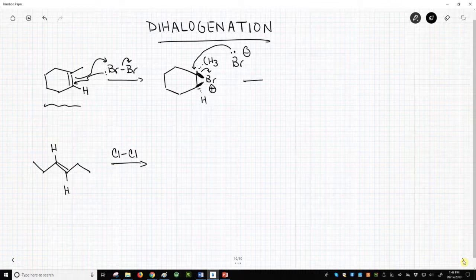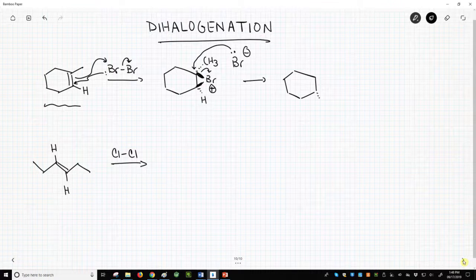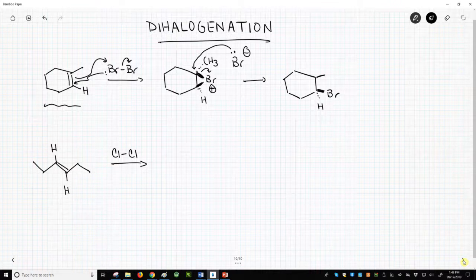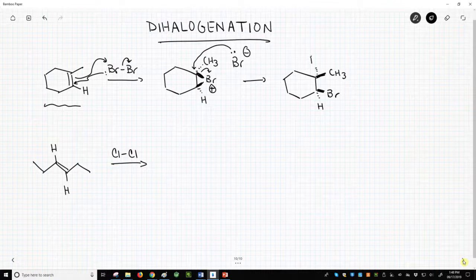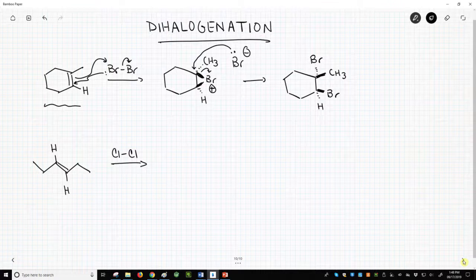The resulting product is this dibromide. Note that the methyl group was down and it gets pushed up as the bromine comes in from the bottom face. Note that the two new bromines are trans with respect to the ring of the molecule. Dihalogenation is an anti-addition.